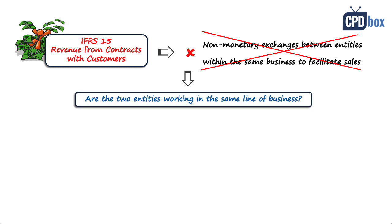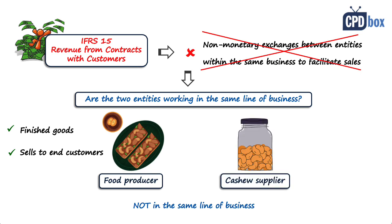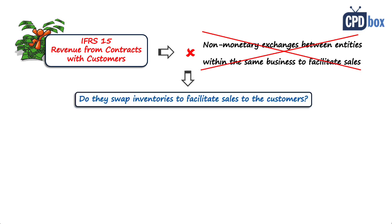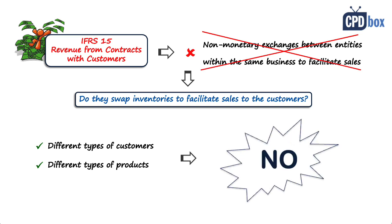So the question is: are you working in the same line of business? I would say no, because the food producer produces ready-made products and sells them to end customers. The supplier grows cashews, which are a pretty different item from processed food, and the agricultural company likely has different customers. The second question is: do you swap inventories to facilitate sales to customers? As these two companies make products for different types of customers, the answer is no — these inventories, whether cashews or finished products, are not swapped to facilitate sales. So this transaction is not excluded from the scope of IFRS 15.